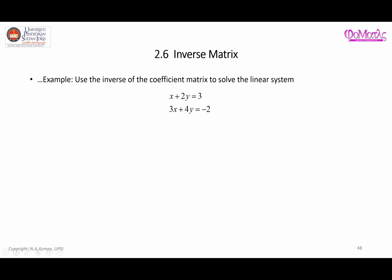So here is the linear system, which you can write in terms of matrix A, which concerns the coefficients. So we have one and two, and then three and four. This is matrix A. Right next to X is the column matrix that contains the unknown variables X and Y. And then right here is column matrix B, which is three and negative two.